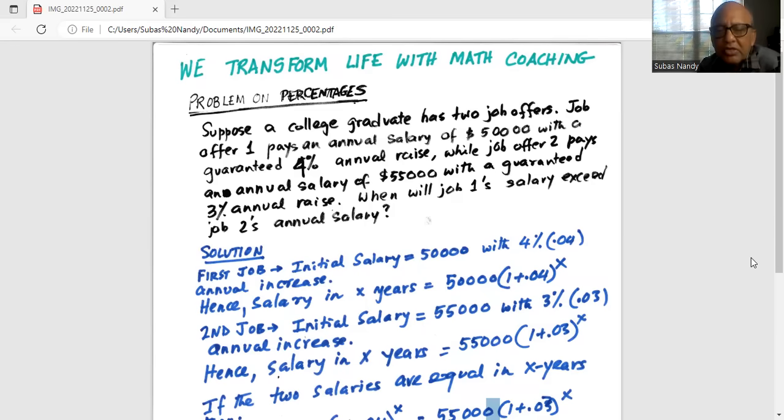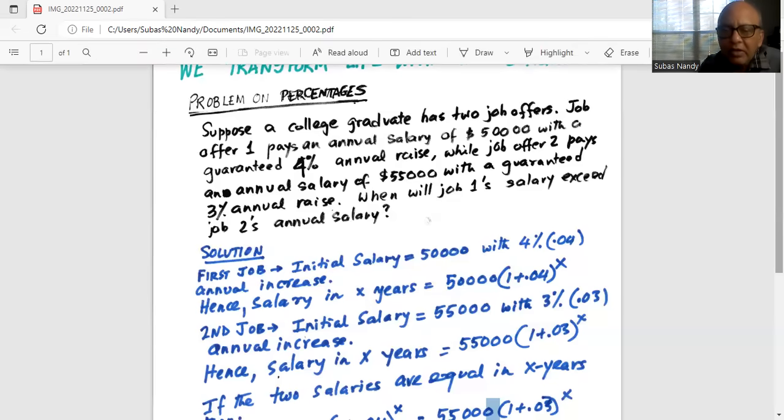Second job: initial salary $55,000 with 3% annual increase. Salary in X years will be $55,000 times 1 plus 0.03 exponent X, or $55,000 times 1.03 exponent X, where 0.03 is the annual growth. Again, compounding is happening here.